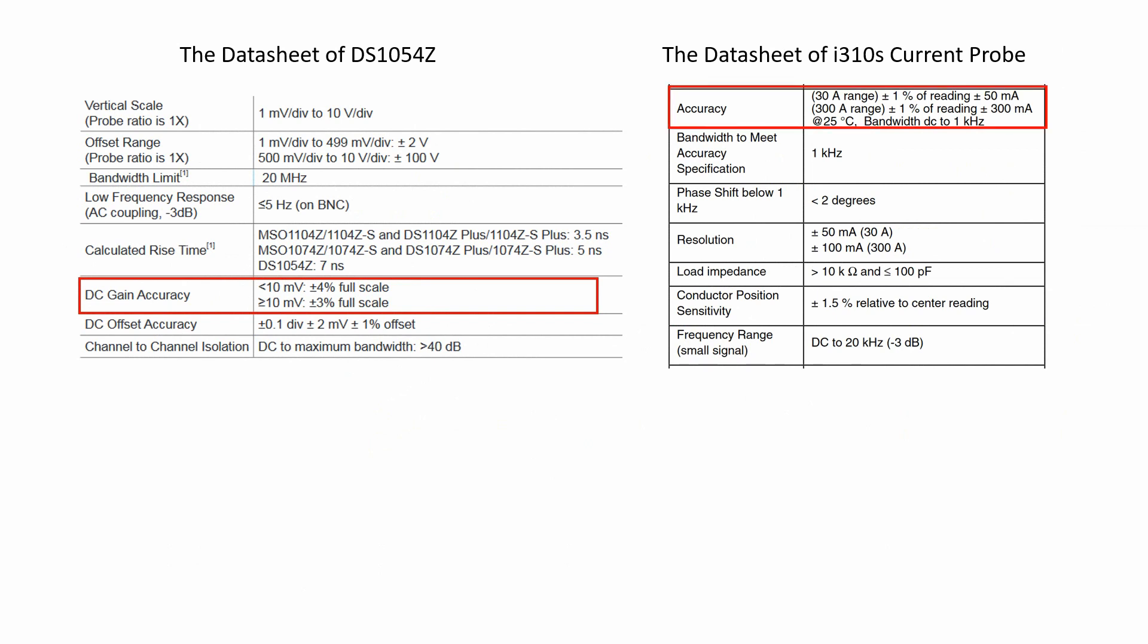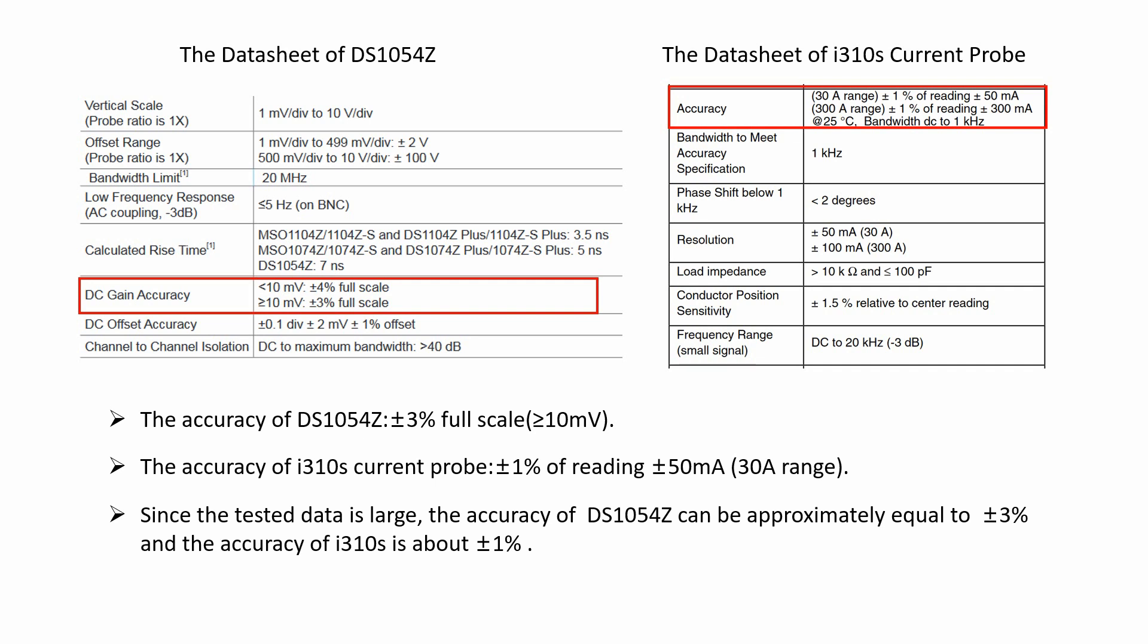The accuracy of DS1054Z, plus or minus 3%, full scale less than 10 mV. The accuracy of I310S current probe, plus or minus 1% of reading, plus or minus 50 mA, 30A range. Since the tested data is large, the accuracy of DS1054Z can be approximately equal to plus or minus 3%, and the accuracy of I310S is about plus or minus 1%.